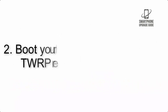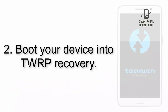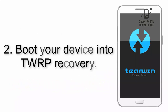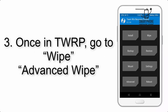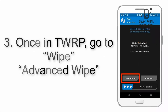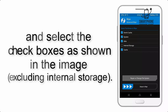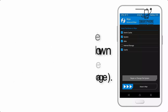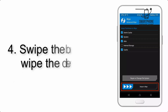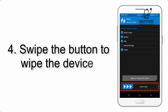Step 2: Boot your device into TWRP recovery. Once in TWRP, click on Wipe Advanced and select the checkboxes as shown in the image, excluding internal storage.